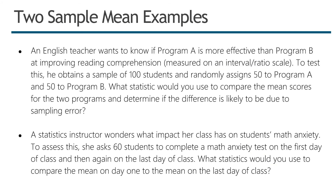An English teacher wants to know if Program A is more effective than Program B at improving reading comprehension. He obtains a sample of 100 students and randomly assigns 50 to Program A and 50 to Program B. We have two separate groups, and assuming reading comprehension scores are measured on an interval ratio scale, we could obtain two separate means. In that case, you would use an independent T because it's two separate groups.